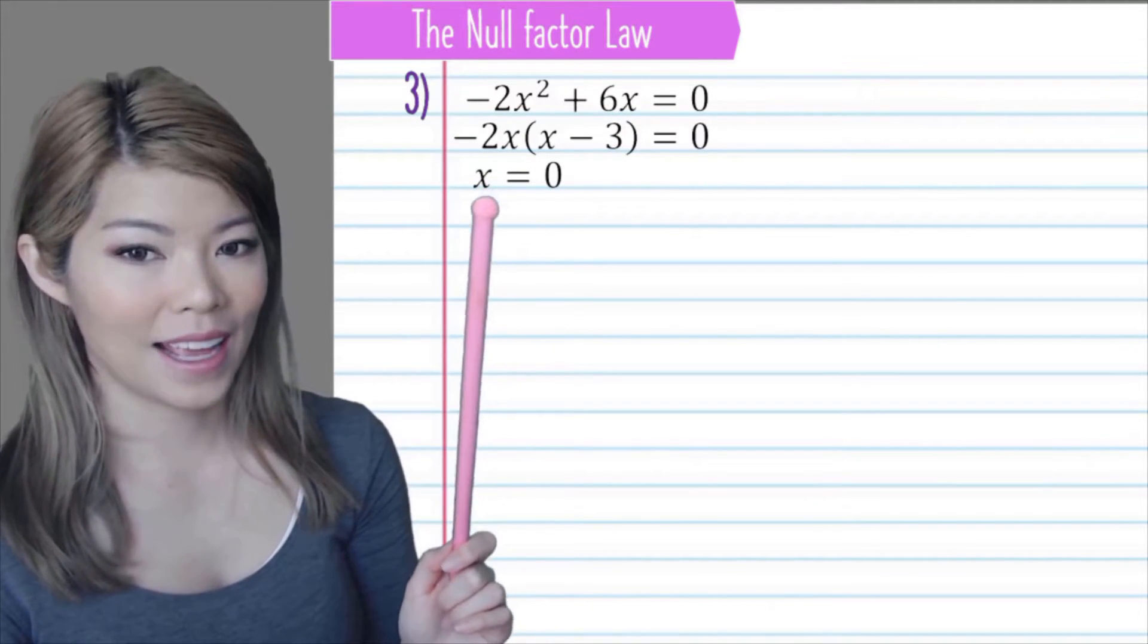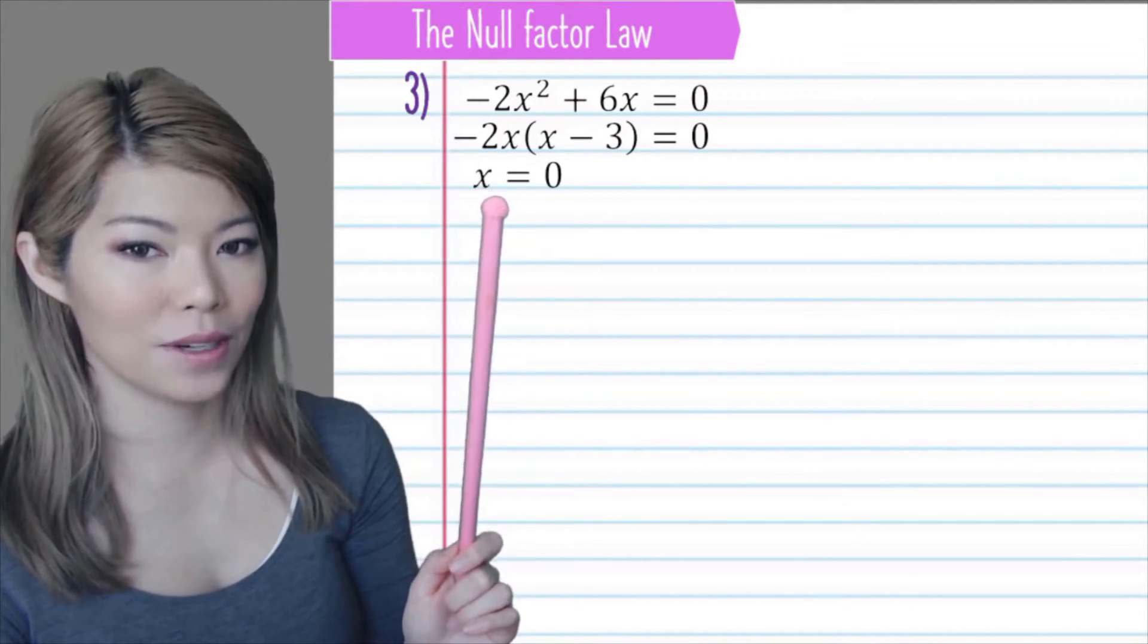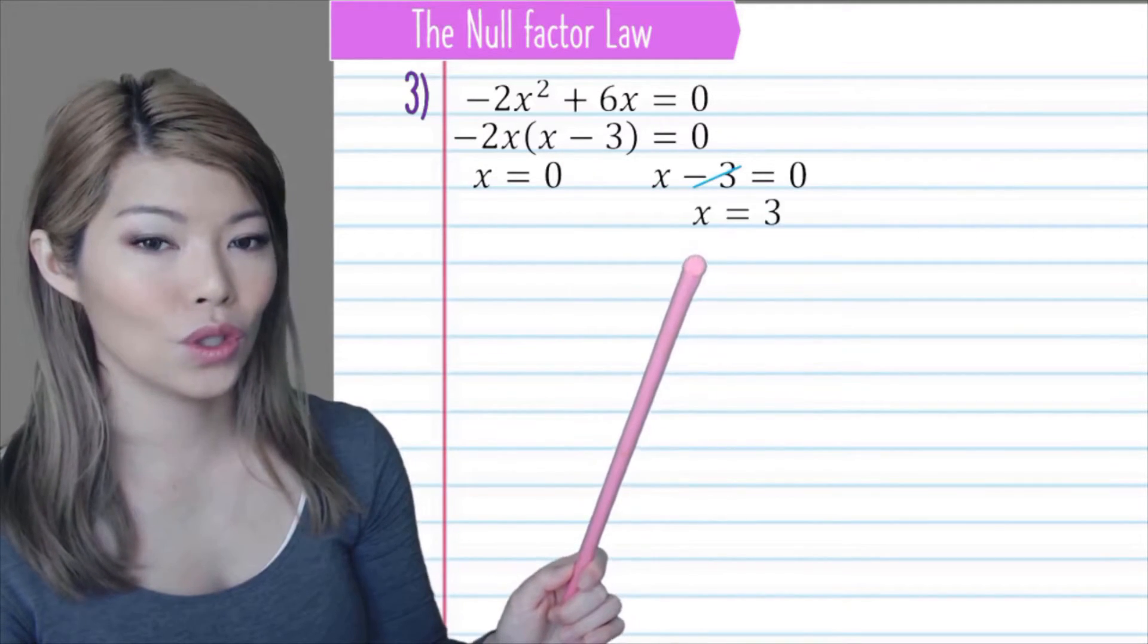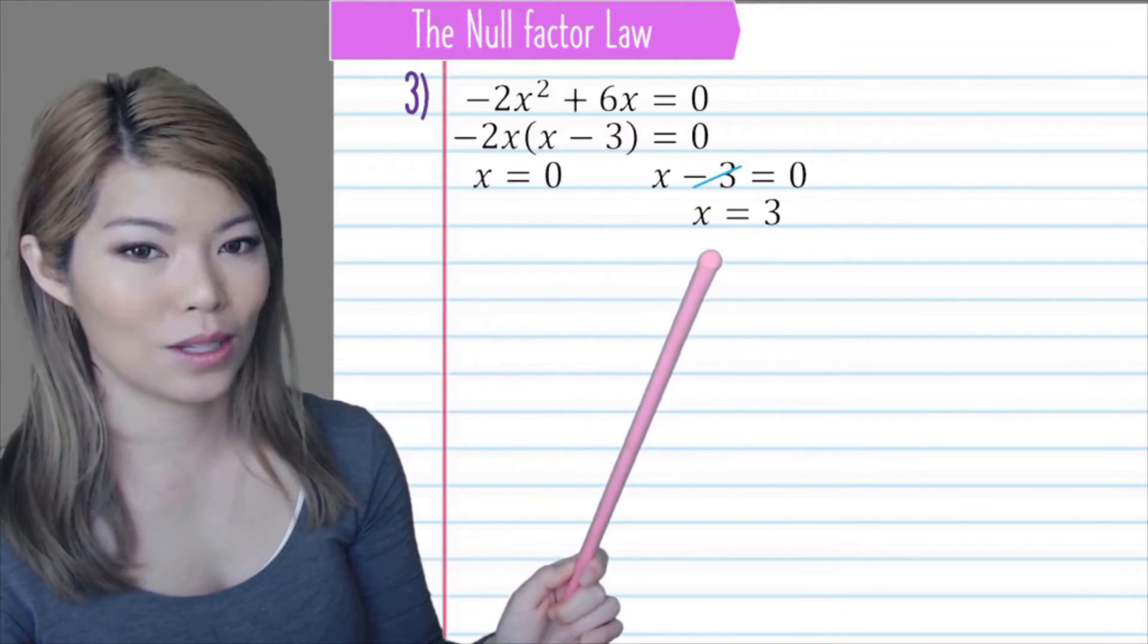So now we have x equals 0 for that negative 2x is 0. And x minus 3 is 0, so x is equal to, bring the 3 over, 3. So these are the two solutions.